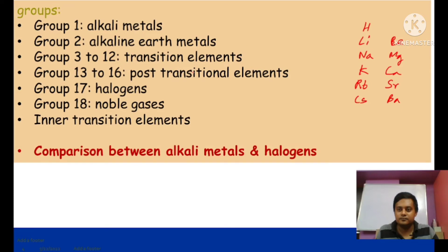Groups 13 to 16 are post-transition elements. Group 13 (boron group): boron, aluminium, gallium, indium, thallium. Group 14 (carbon group): carbon, silicon, germanium, tin, lead. Group 15 (nitrogen group): nitrogen, phosphorus, arsenic, antimony, bismuth. Group 16 (chalcogens, meaning ore-forming): oxygen, sulphur, selenium, tellurium, polonium — most ores are either oxides or sulfides, hence the name chalcogen.